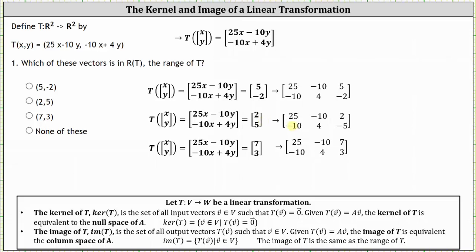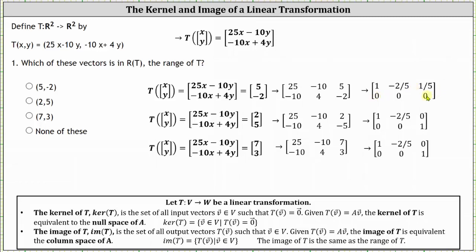The next step is to write the augmented matrix in reduced row echelon form, which I've done to save time. Because we have two equations and two unknowns, looking at the first augmented matrix in RREF, we have a row of zeros in the second row, meaning we have an infinite number of solutions — the system is consistent and dependent. Because we have at least one solution, the vector (5, -2) is in the range of T, or the image of T. However, in the next two augmented matrices in RREF, the second rows show 0, 0, 1 — a contradiction, since 0 does not equal 1. These two systems are inconsistent, so vectors (2, 5) and (7, 3) are not in the range or image of T.